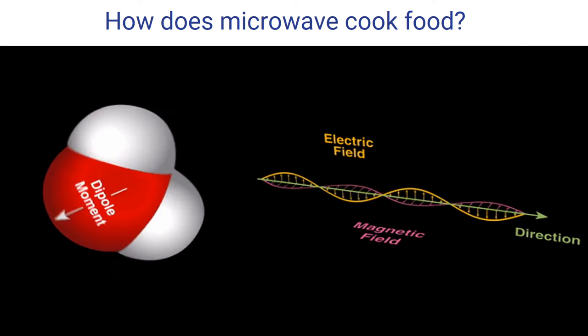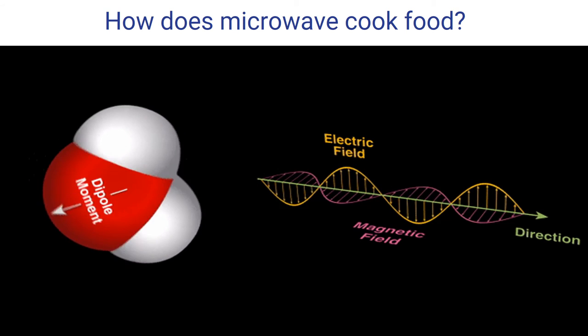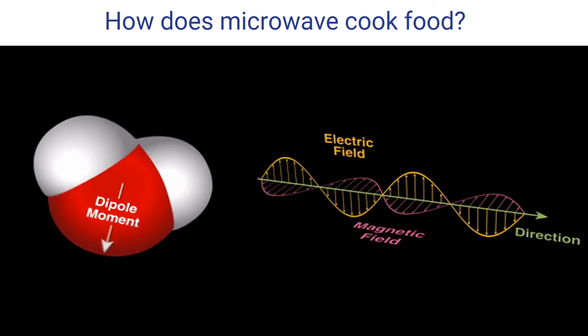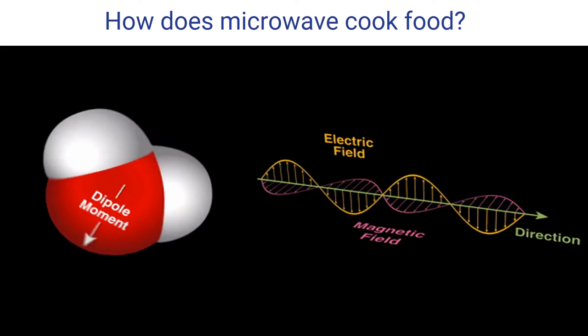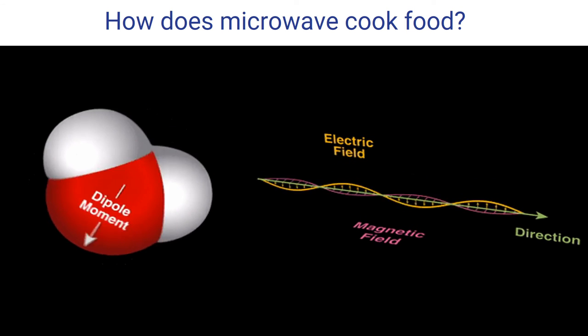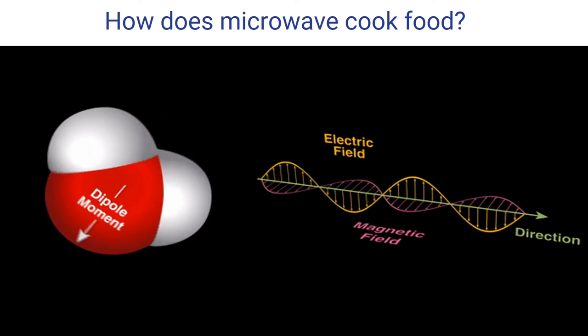Water molecules in our food have a dipole moment as shown in the figure. Our food is exposed to electromagnetic waves which emanate from the tube. In electromagnetic waves, the direction of electric and magnetic field changes 2.45 billion times per second. The dipole of the water molecule tries to align with the electric field and rotates very fast. We can see this change from the figure.